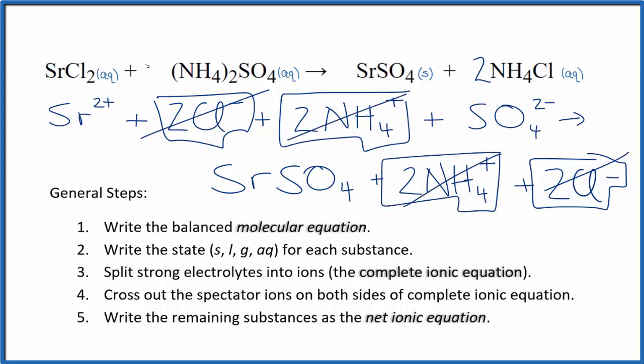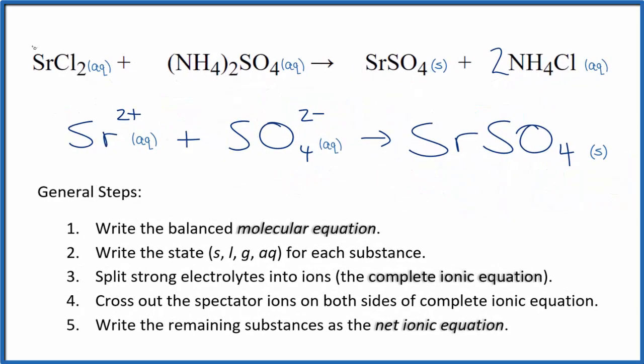But what's left, that's the net ionic equation for strontium chloride plus ammonium sulfate. I'll clean it up, write the states, and we'll have our net ionic equation. So this is the net ionic equation for SrCl2 plus (NH4)2SO4.